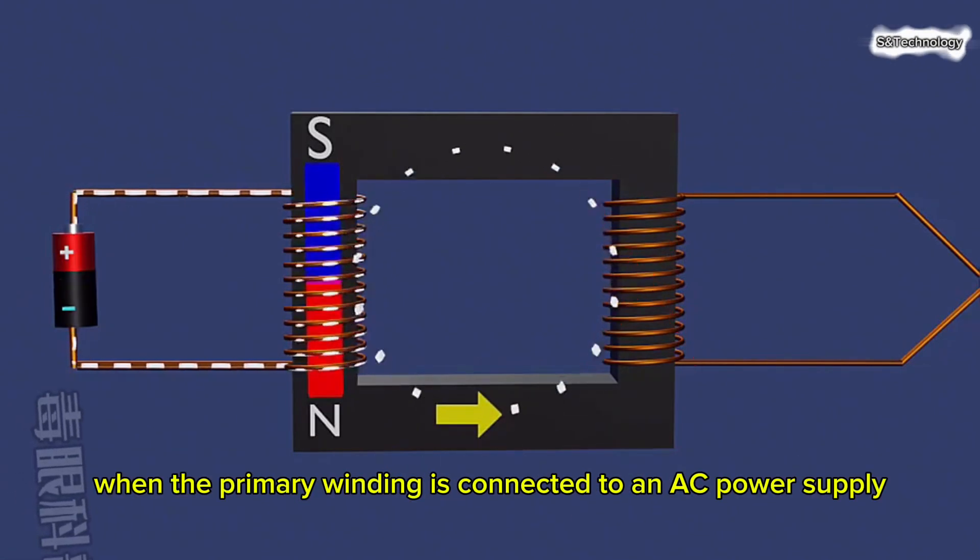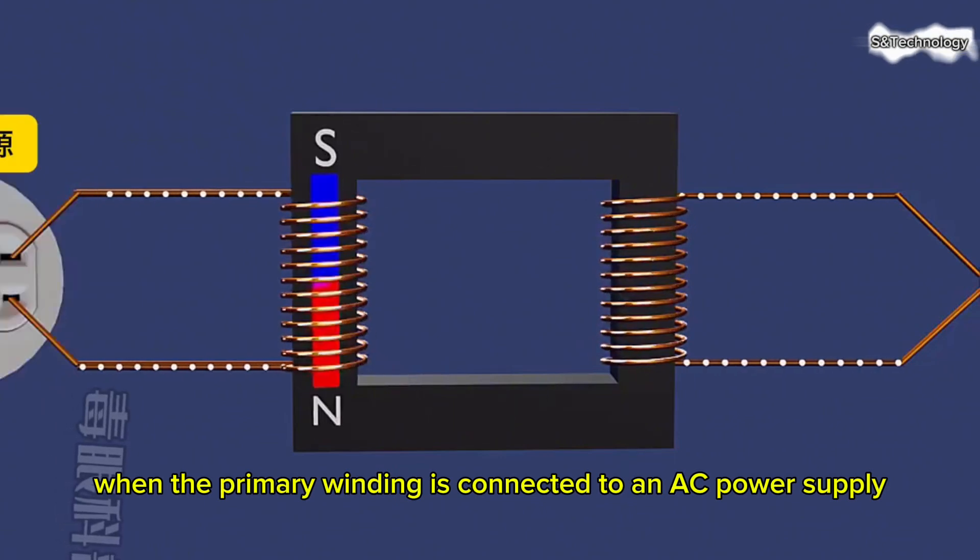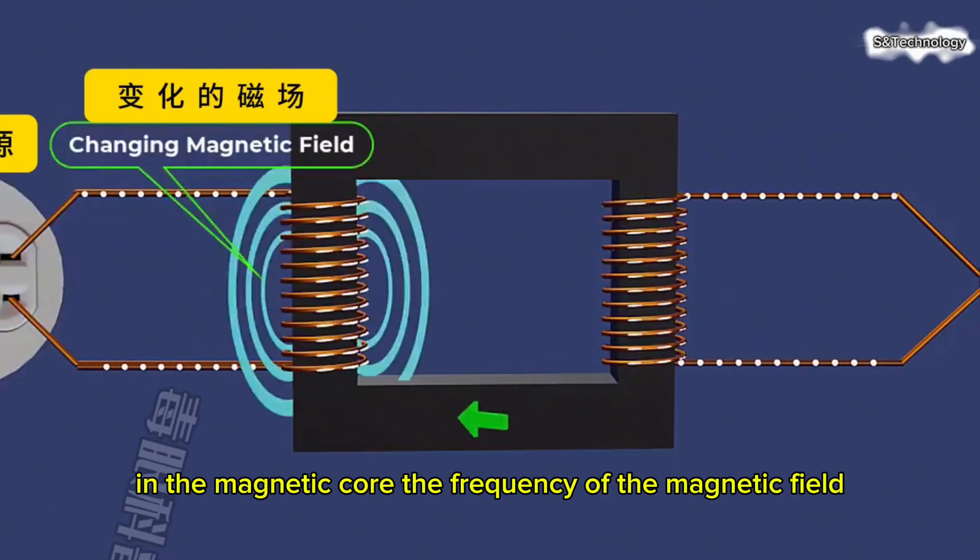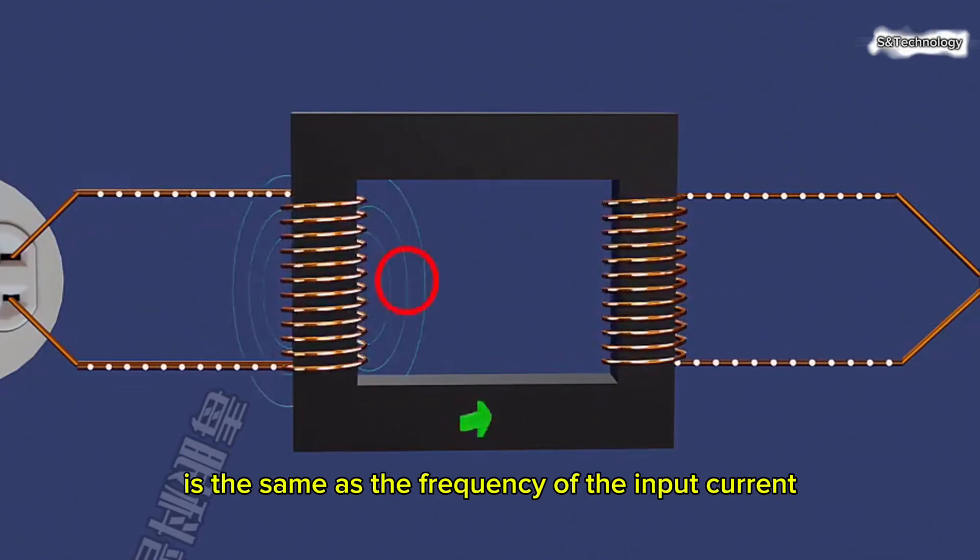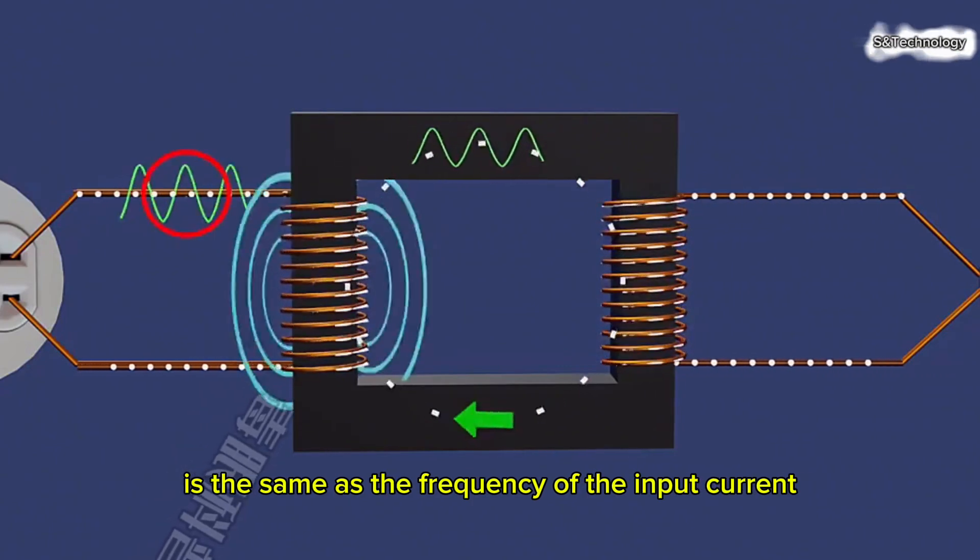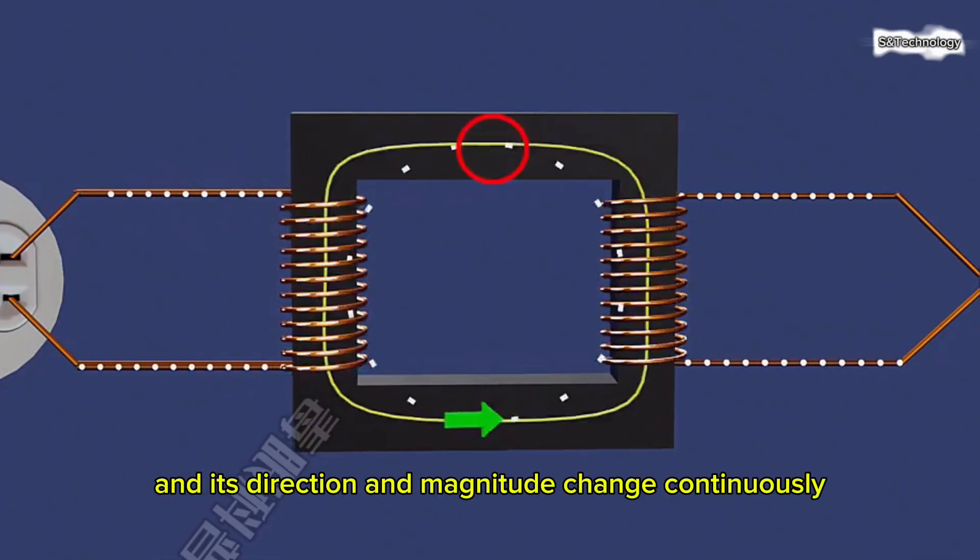However, when the primary winding is connected to an AC power supply, the current in the coil will form a changing magnetic flux in the magnetic core. The frequency of the magnetic field is the same as the frequency of the input current, and its direction and magnitude change continuously.